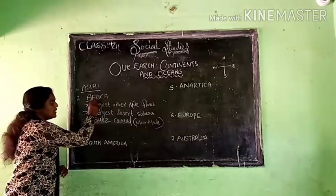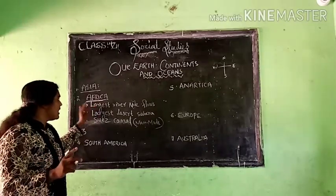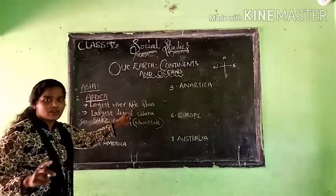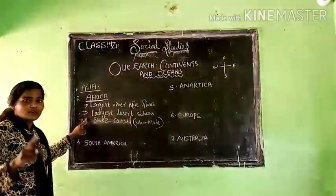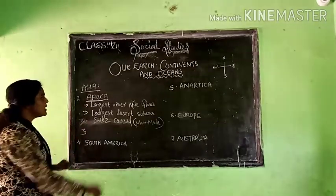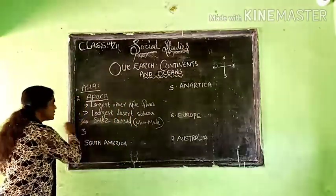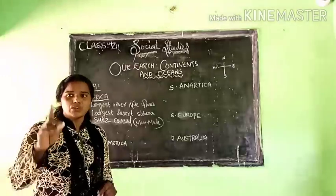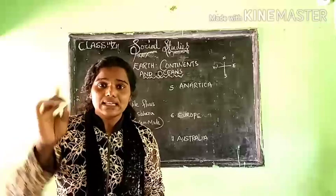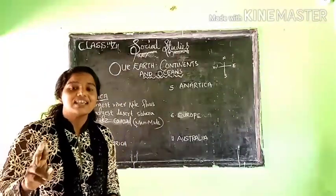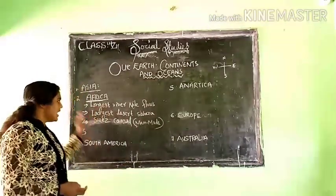To summarize: the first speciality of the African continent is that it is the second largest continent. The world's longest river, the Nile, flows through it. The largest desert, the Sahara, is in Africa. And the Suez Canal, a man-made canal, makes transportation easier between two continents. I hope you understood about the African continent.